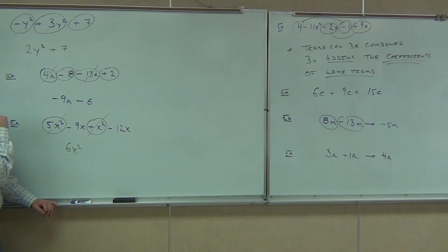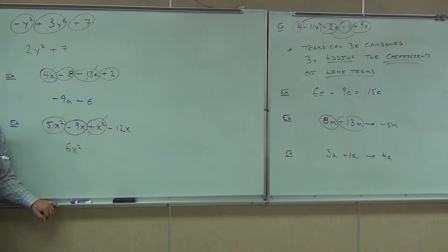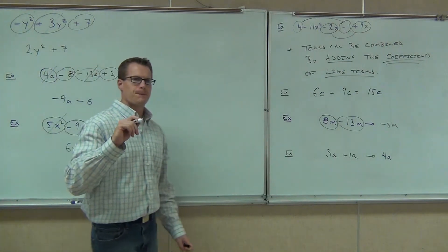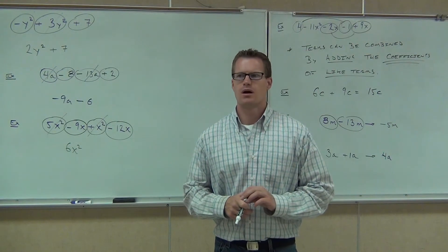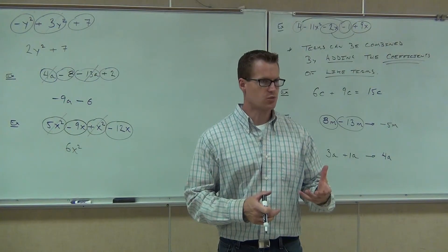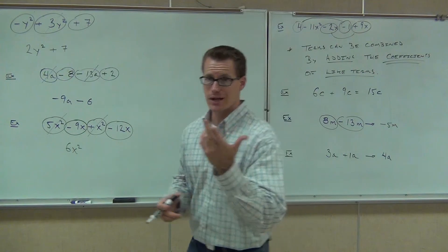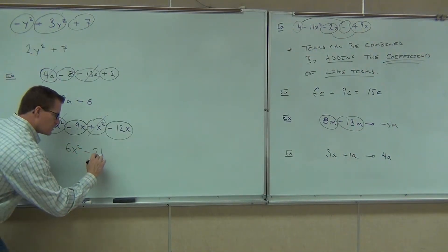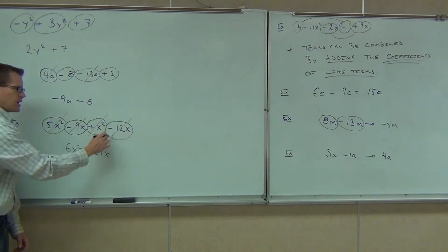And then we've got a negative 9x. Circle it with a sign. What else do we have that's a like term? Negative 12x. Combine them for me — how much do you get? Negative 21x. Why not positive? Because they're both negative. So we're doing the addition rule — when you combine like terms, same sign, we add them together and keep the common sign. Negative 21x, or minus 21x — that's what we got. We'll cross them out because we combined those two things.